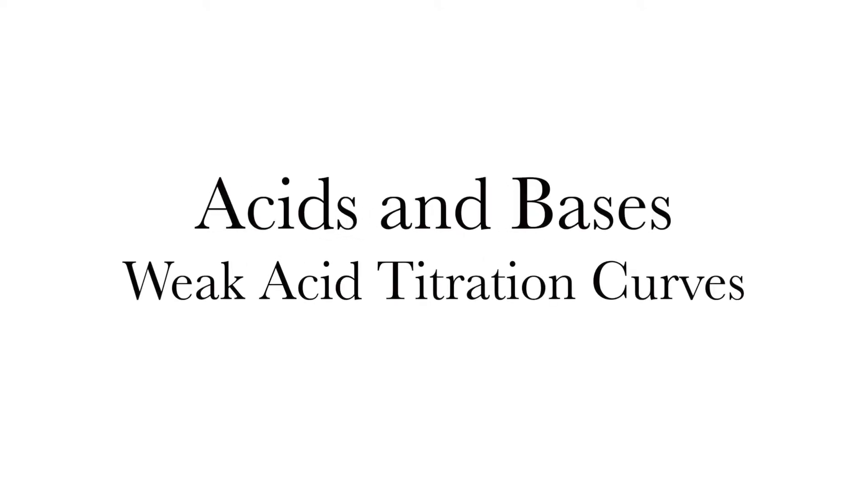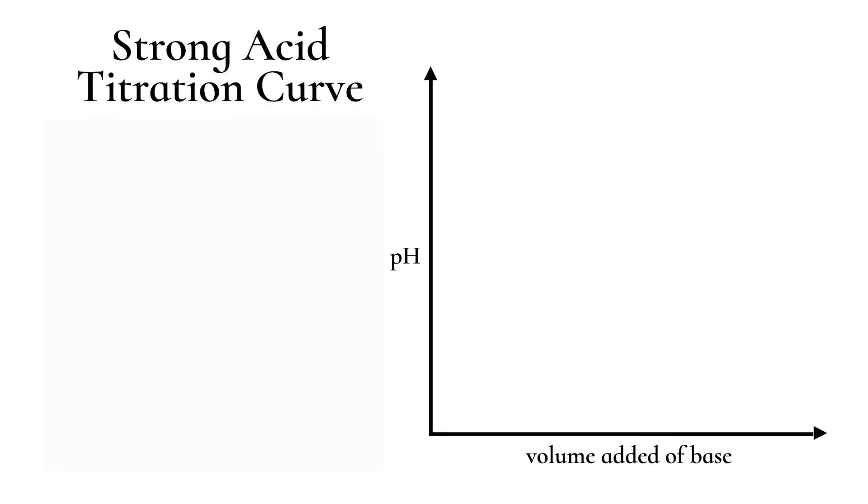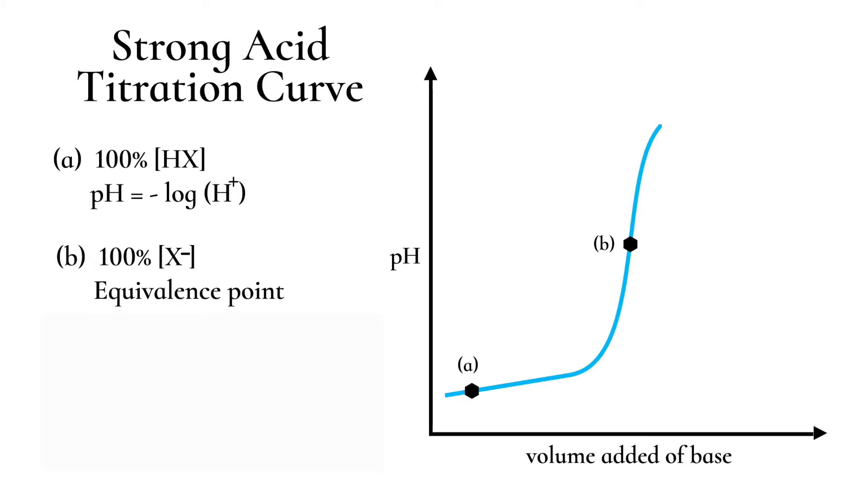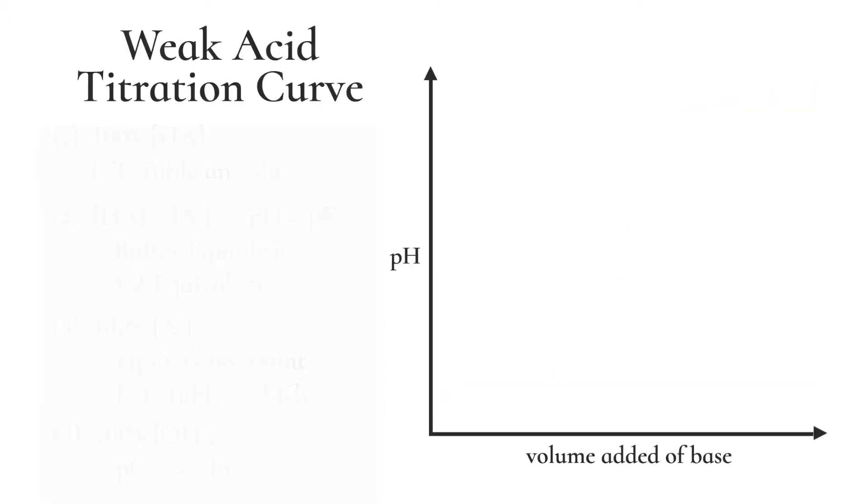Acids and bases, weak acid titration curves. Now today we are going to be working on our first titration. A strong acid with a strong base has a very simple titration curve. You start off, you have all acid, you get to an equivalence point, and then you finish, you have all base. However, a weak acid has a more complicated titration curve.